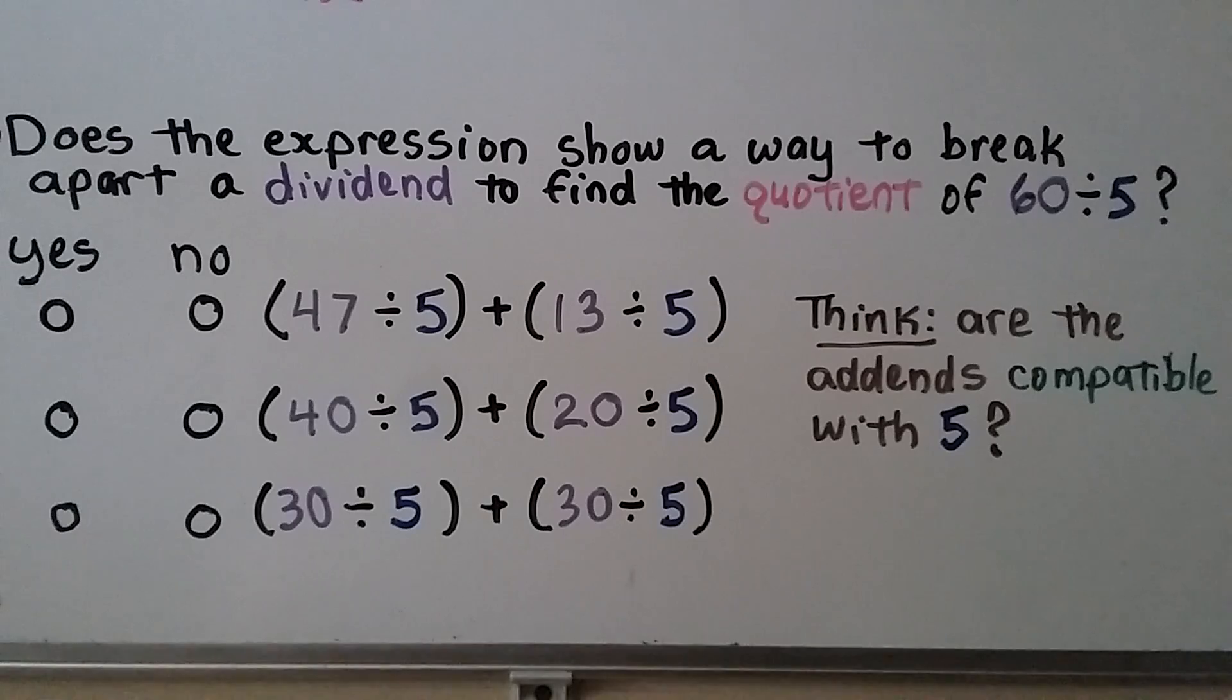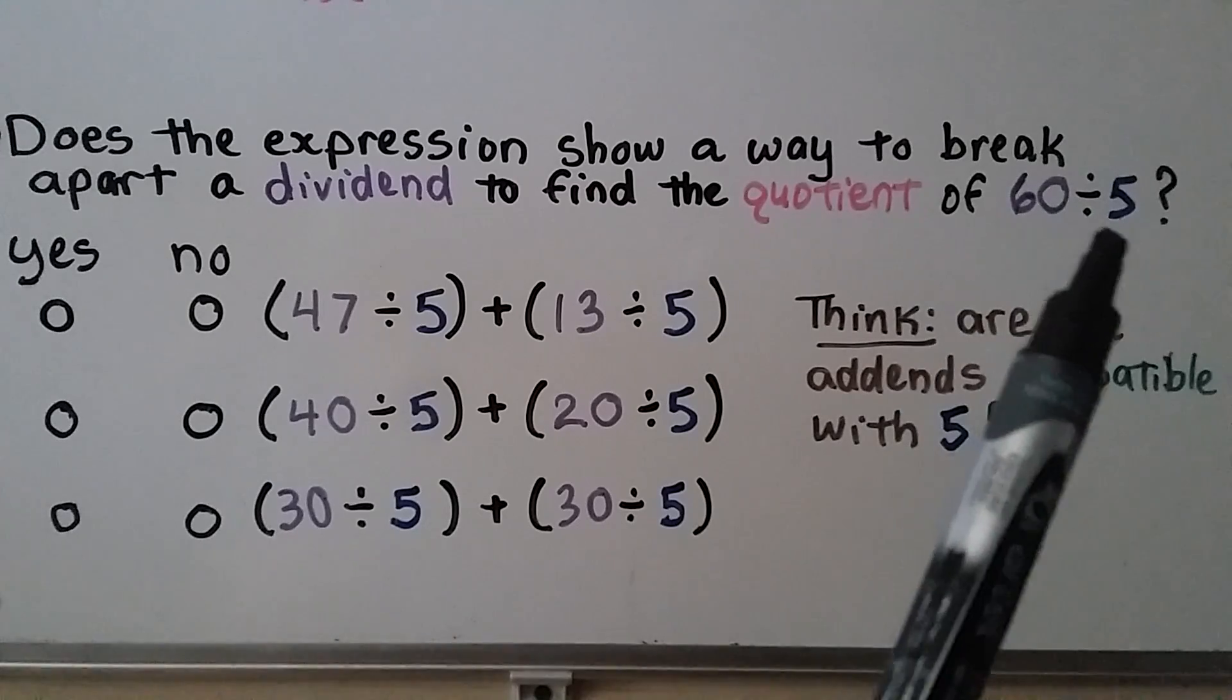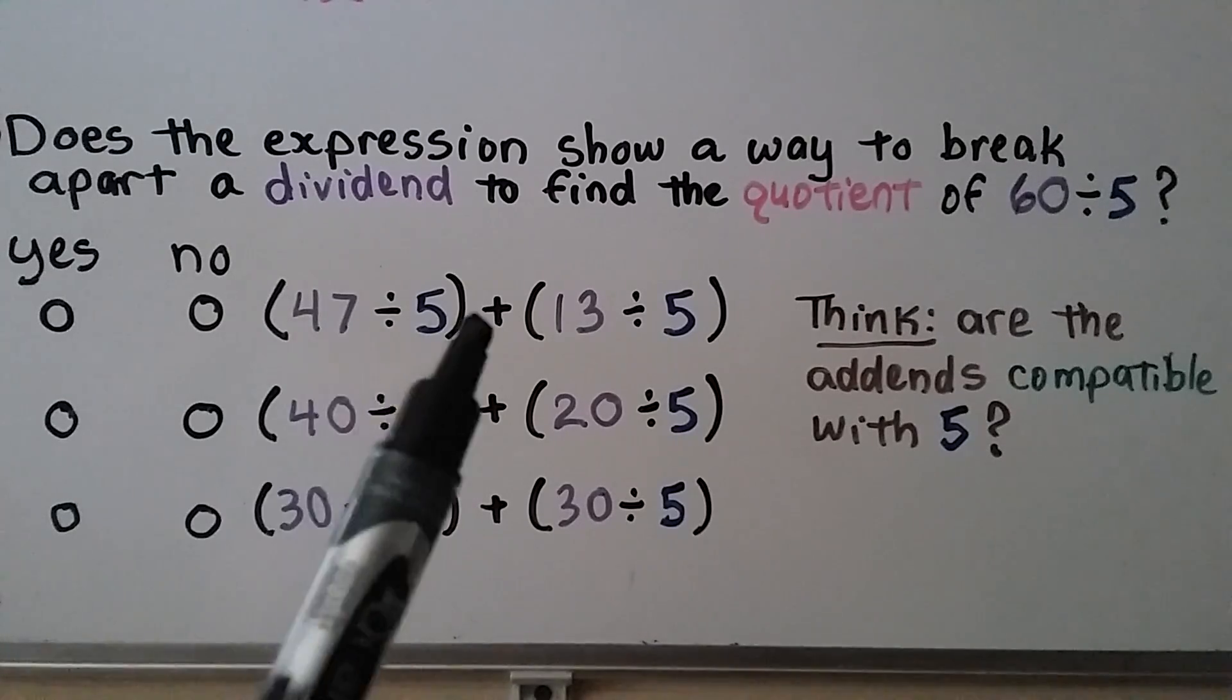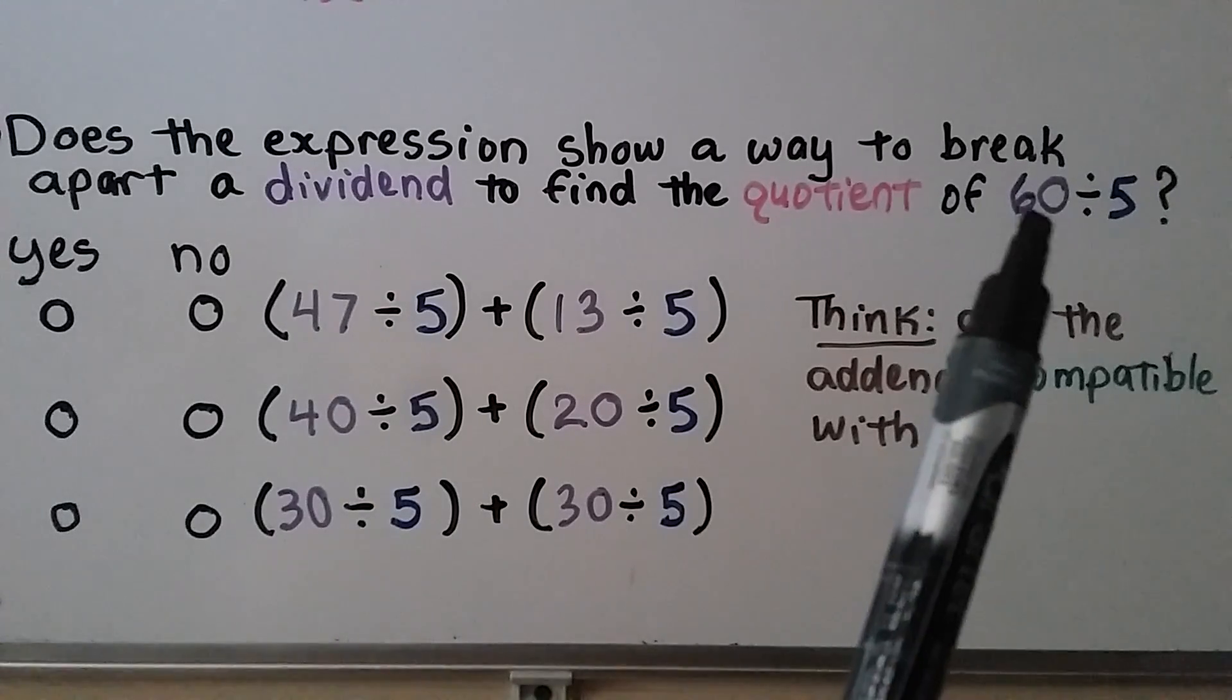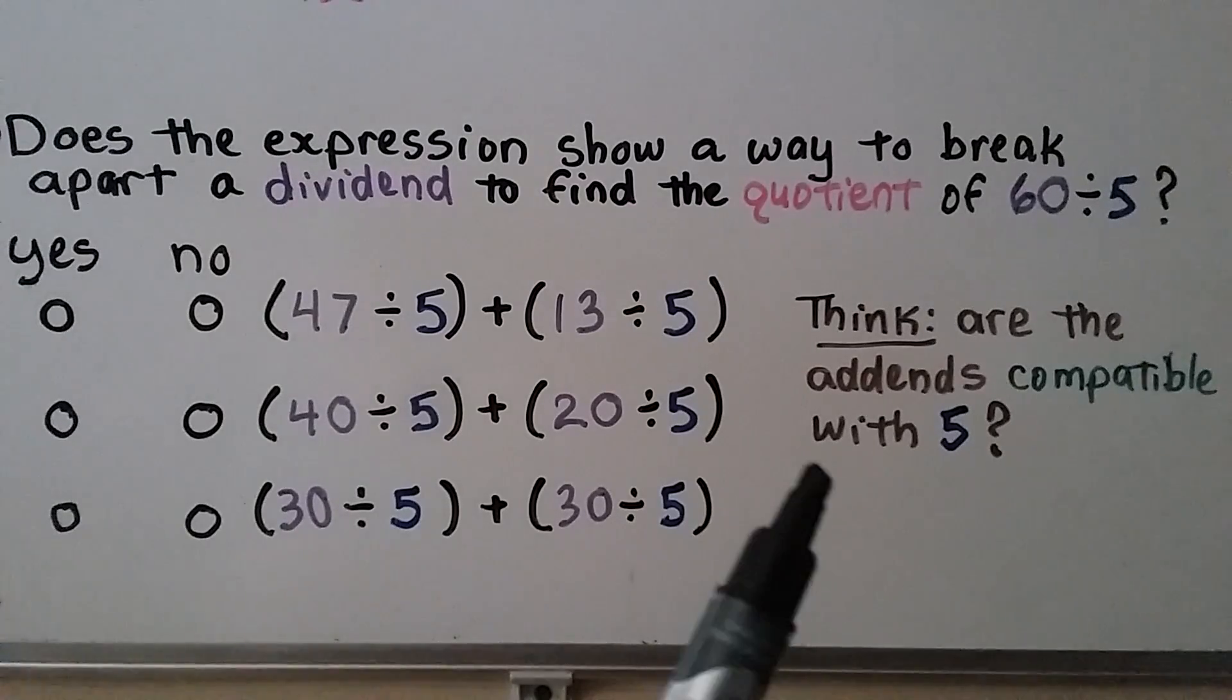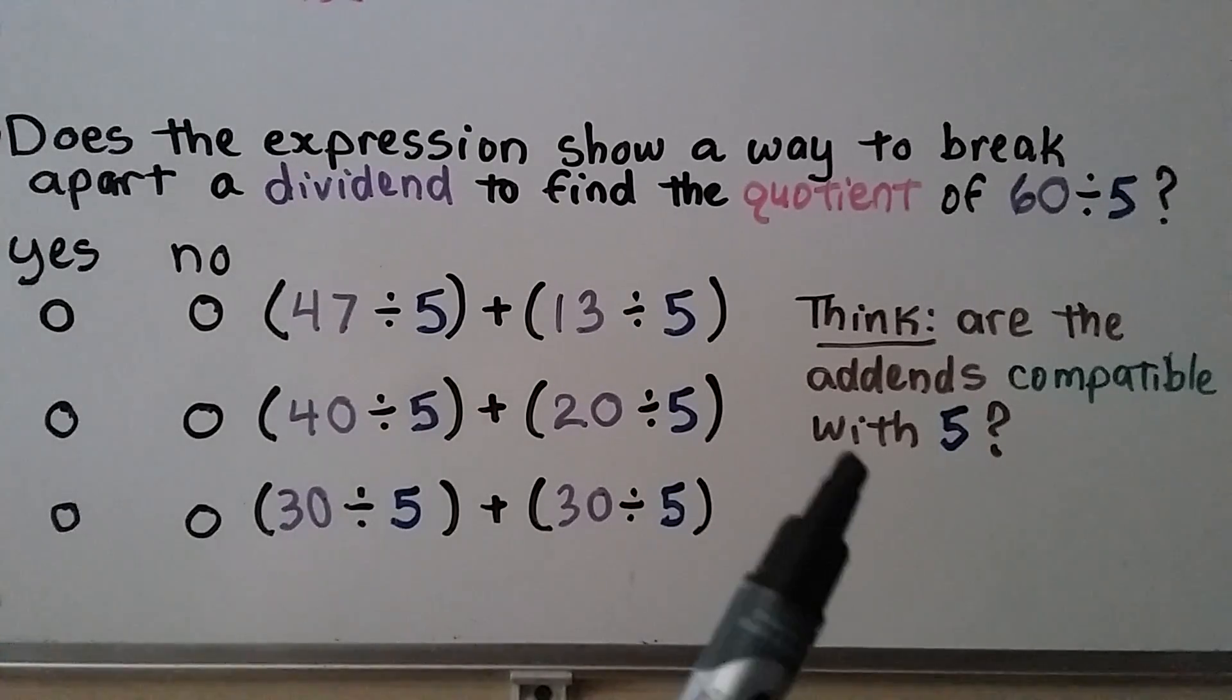Does the expression show a way to break apart a dividend to find the quotient of 60 divided by 5? So we have 3 different expressions. We need to see if they would show a way to break apart the dividend 60 for 60 divided by 5. So we think, are the addends compatible with 5?